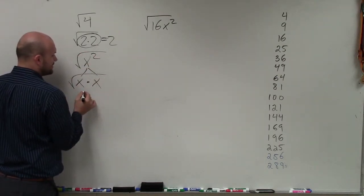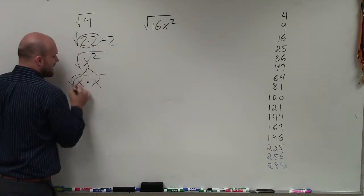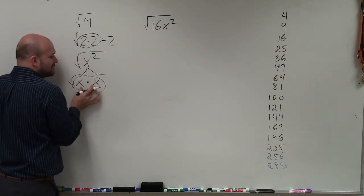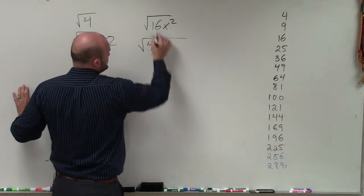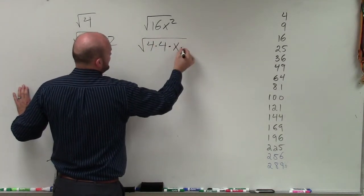So if I'm taking the square root of that number, again, just like with the numbers, I want to pull out any factors that multiply by themselves. So what I do is I break this up and do 4 times 4, which gives us 16, times x times x.